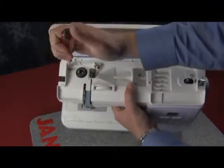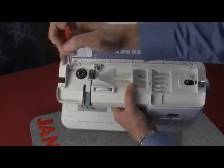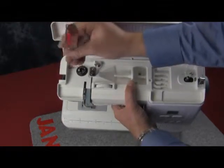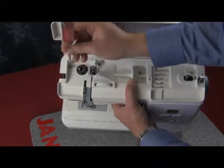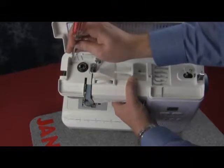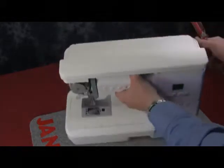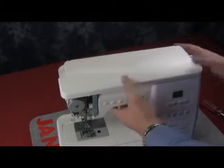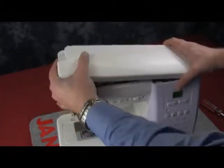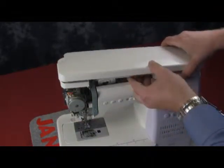Now to the left of the pressure dial there is a small Phillips head screw and that needs to be removed as well. Now that you have removed both screws, you can start to gently lift up on the top cover and it will separate from the machine.